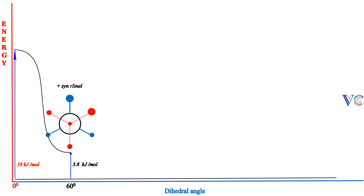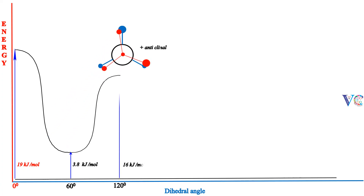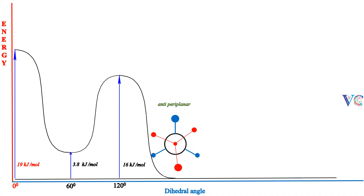Rotation of C2 in the plus synclinal conformer by plus 60 degrees gives the plus anticlinal conformer. Rotation of C2 in the plus anticlinal conformer by plus 60 degrees yields the anti-periplanar conformer. It is the most stable conformer due to complete staggering of methyl groups and hydrogen atoms on C2 and C3 carbon atoms.